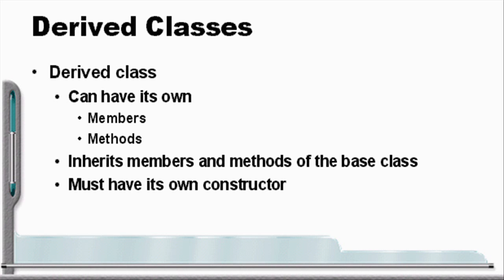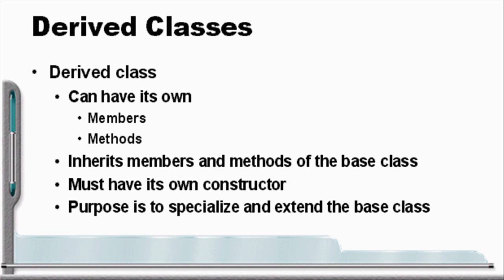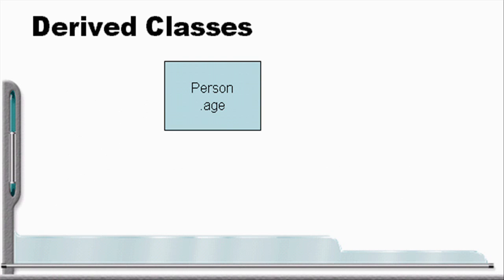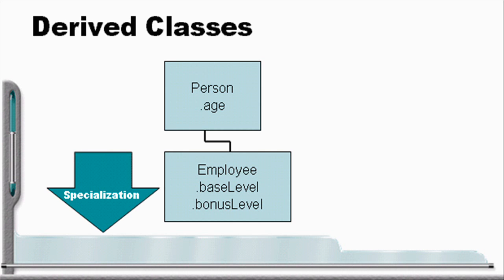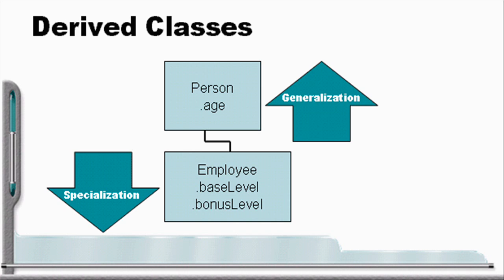The derived class always must have its own constructor. Typically, the purpose of a derived class is to specialize and extend the base class. Let's take a look at inheritance by looking at a person class that would have a member variable age. We derive from person to create the employee object and we'll add two new member variables: base level and bonus level. Employee also inherits the age member from the person class. The employee class specializes person — an employee is a specialized kind of person.